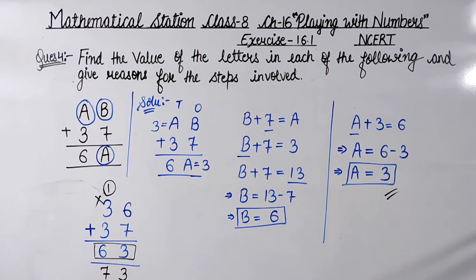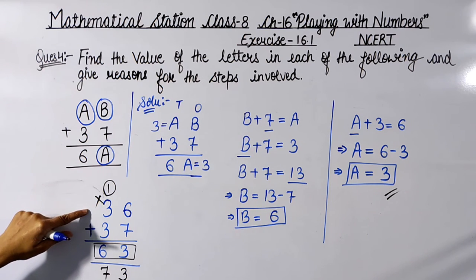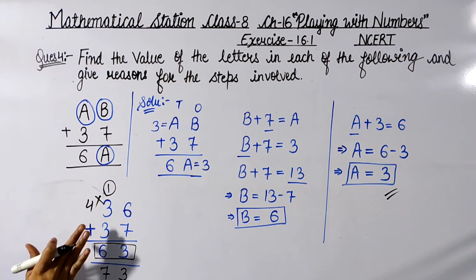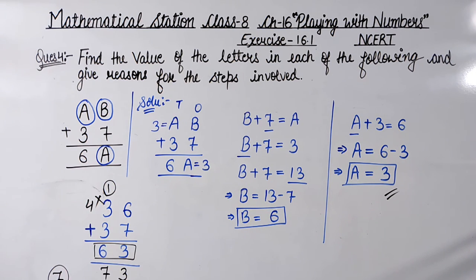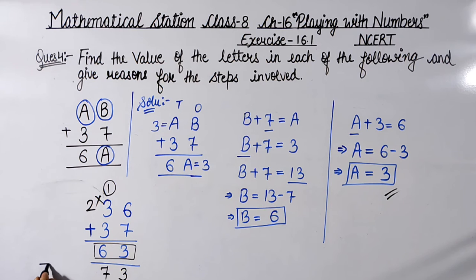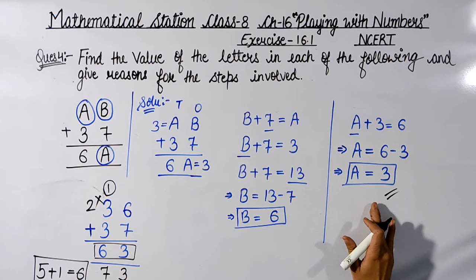The mistake started with A = 3. A cannot be 3. Let's check if a larger number works — suppose A = 4: 4 + 3 = 7, which is still greater than 6. Any larger number will give a result greater than 6, so no larger number works either. We need a number smaller than 3. Let's try A = 2: 2 + 3 = 5, and adding the carry of 1 gives 5 + 1 = 6. So A = 2 works.